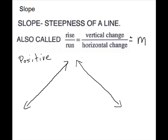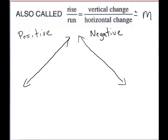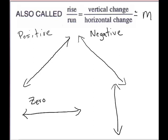Our other two cases: first, a zero slope, which is a horizontal line. It does not go up or down — there's no vertical change, so you get a zero in the numerator. And then we have the undefined slope, which is our vertical line. We're changing up and down, but we're getting a zero for horizontal change. That's why we have undefined — you are not allowed to have zero in the denominator.